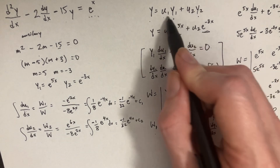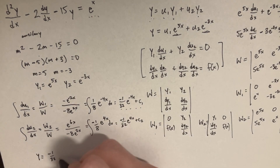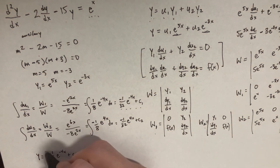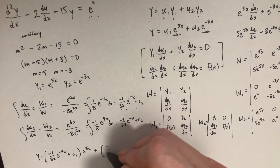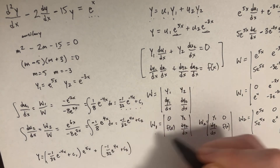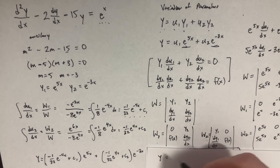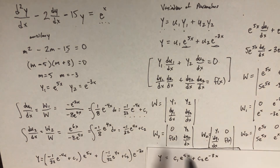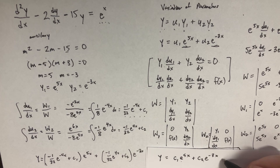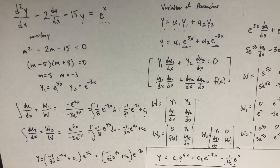Plugging back in: y = u1*y1 + u2*y2 = (-1/32 * e^(-4x) + C1)*e^(5x) + (-1/32 * e^(4x) + C2)*e^(-3x). This simplifies to the final answer: y = C1*e^(5x) + C2*e^(-3x) - (1/16)*e^x. The homogeneous part matches our expected y1, y2 solution, and -(1/16)e^x is the particular solution.